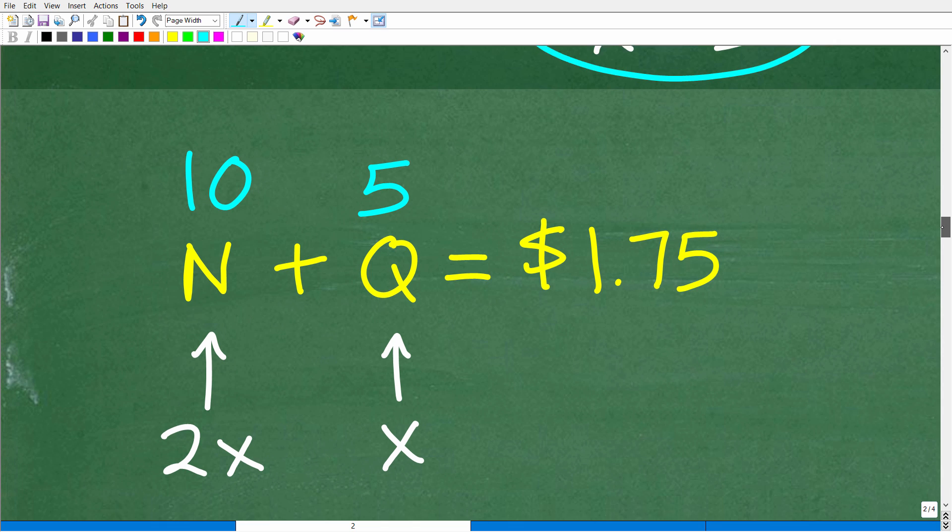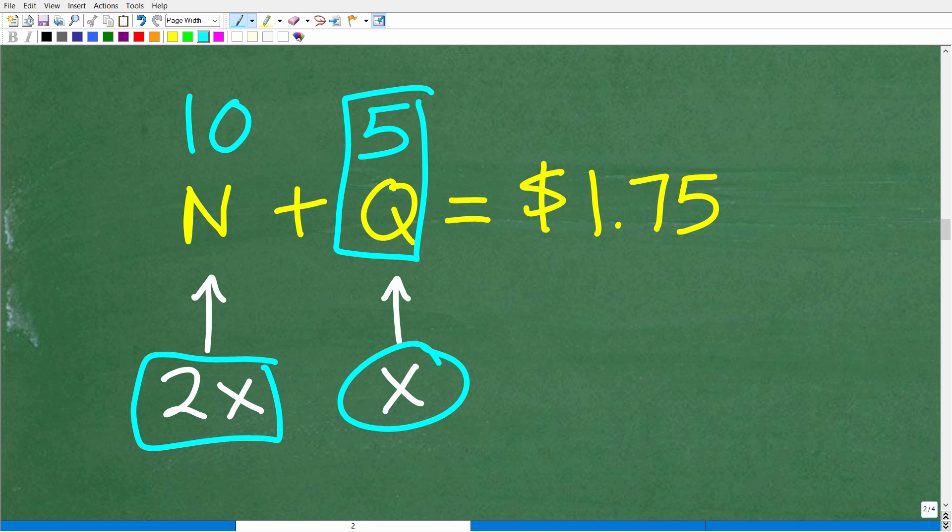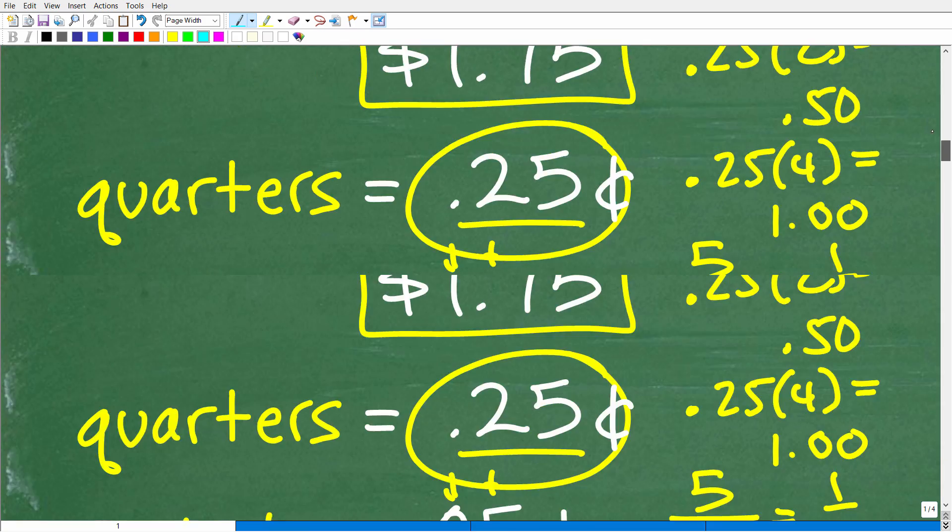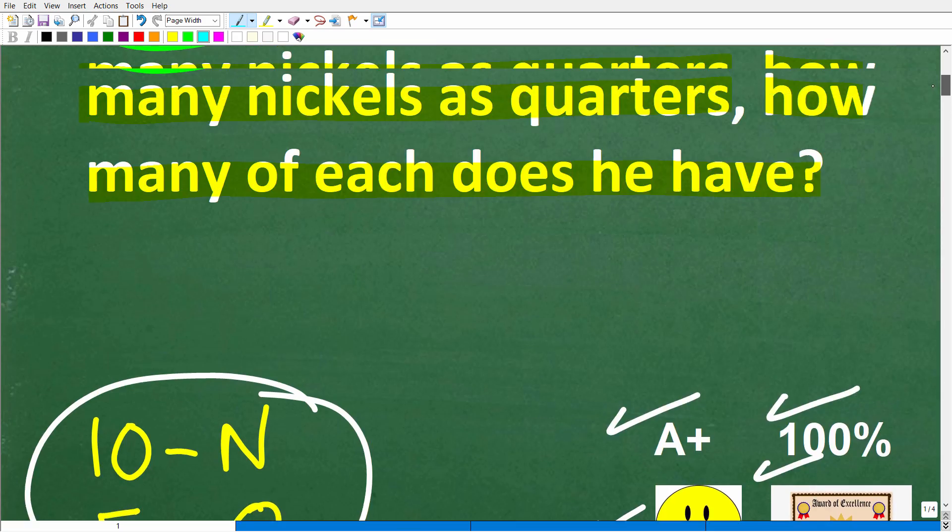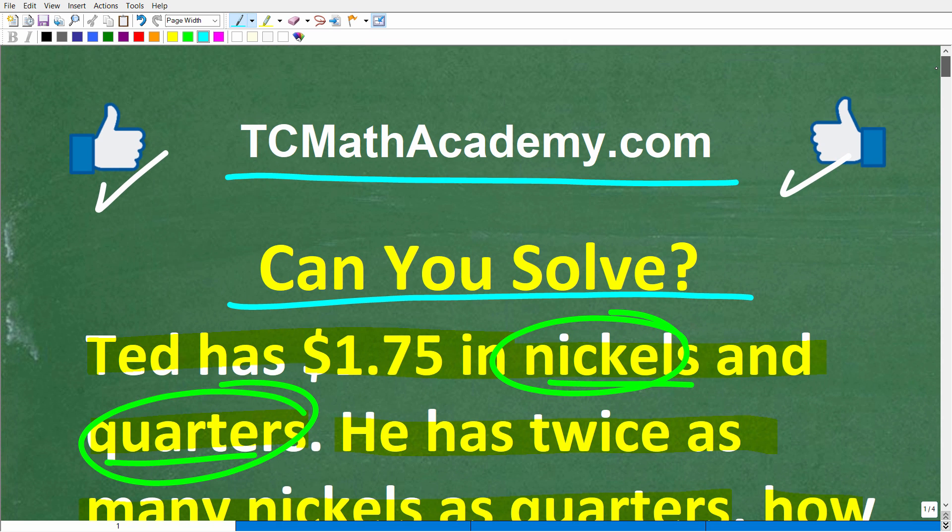But remember, x is what? Well, we established that x is the number of quarters. So he has, Ted has 5 quarters. And he has 2x nickels. So he has twice as many nickels as quarters. So that's going to be 2 times 5, which of course is 10 nickels. All right. So again, you didn't have to use algebra to solve this lovely math word problem. But this is an illustration of how great algebra is.